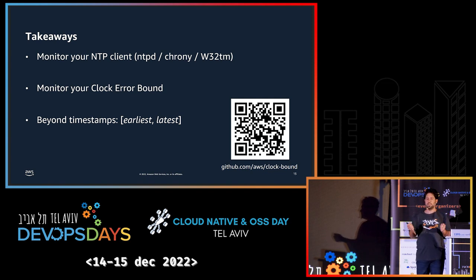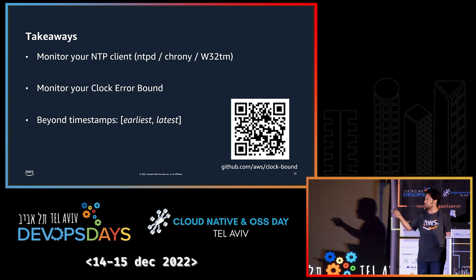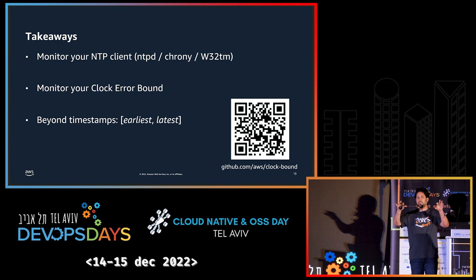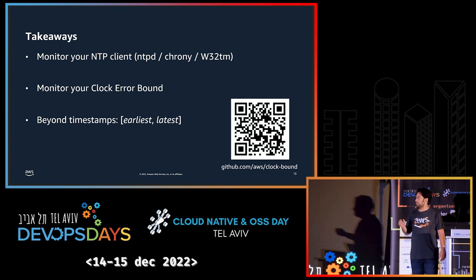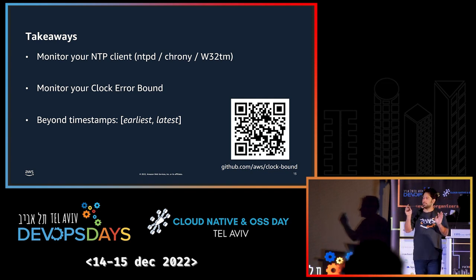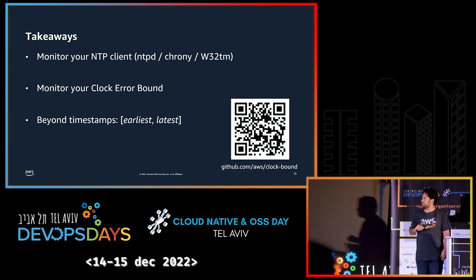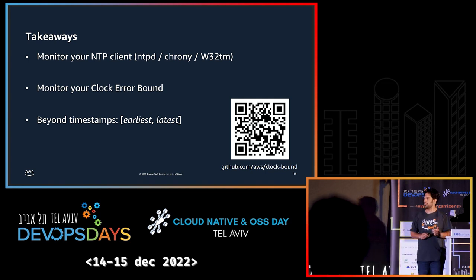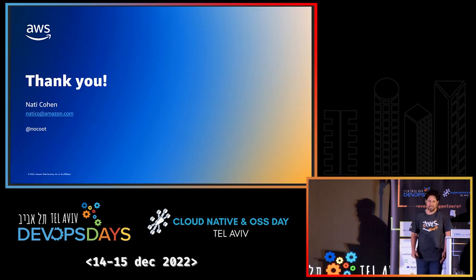We have an open source tool called ClockBound on GitHub that helps you programmatically get the clock error bound from your code. This is very useful when building a distributed database or similar systems. But for now, please monitor your clocks. Thank you so much.